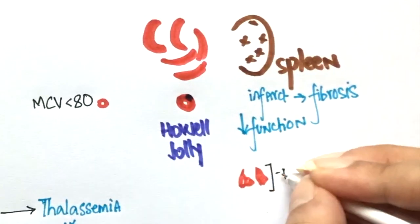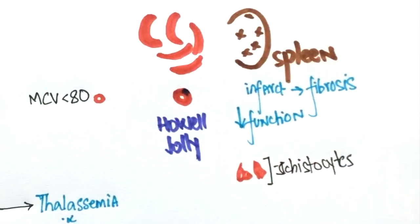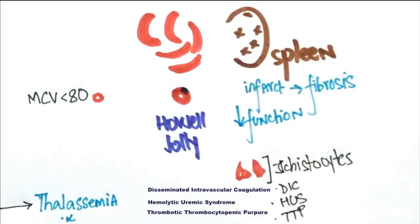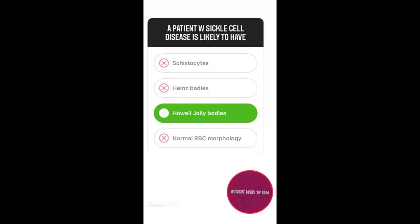Schistocytes are usually seen in hemolytic anemia which is traumatic in nature such as DIC, HUS and TTP. Heinz bodies are seen in G6PD deficiency. This is because the oxidative stress breaks the hemoglobin down.